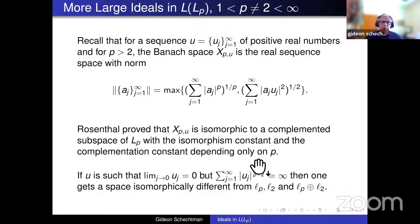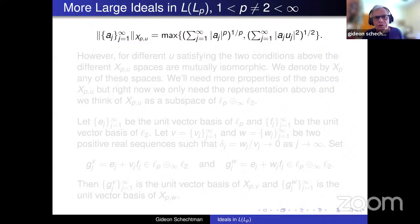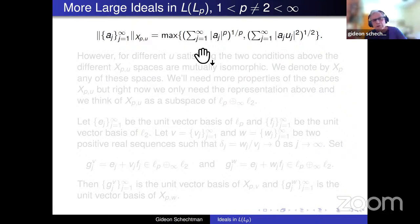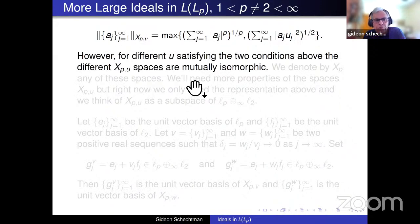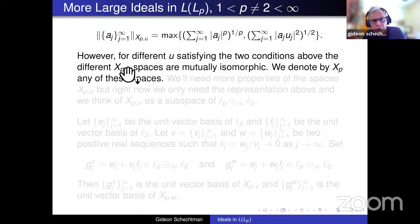At the time this was a big achievement — finding new isomorphically complemented subspaces of Lp. One might hope that different sequences u give different spaces, yielding many complemented subspaces. Unfortunately, Rosenthal proved that for all sequences satisfying the divergence condition above, the resulting spaces X_{p,u} are all mutually isomorphic. We denote this unique new space by X_p. So one gets only one new space up to isomorphism.